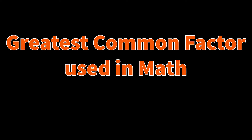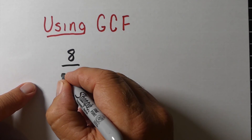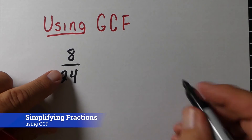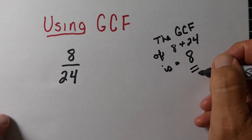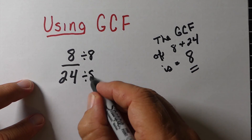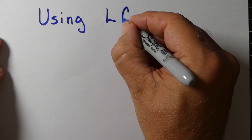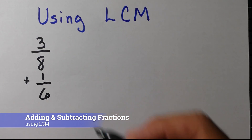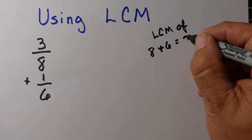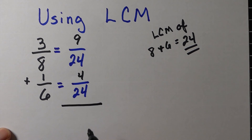Now let's look at how greatest common factor and least common multiple are actually used in math — because math builds on itself. If we have the fraction eight twenty-fourths, we can use the greatest common factor to simplify it. The greatest common factor of eight and twenty-four is eight, so we divide both numbers by eight to get one-third. And the least common multiple comes into play when adding or subtracting fractions — the bottom numbers must be the same. The least common multiple is twenty-four, so once we get the common denominator, we can solve and get thirteen twenty-fourths.